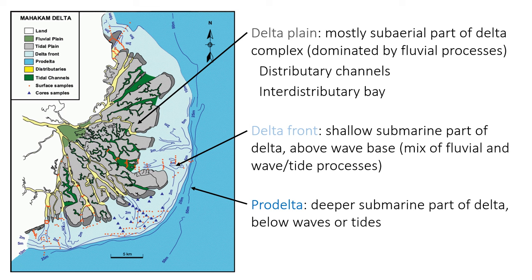The clues for a broader delta-type setting include unidirectional ripples in a marine environment, possibly including climbing ripples closer to the mouth bar, and the potential for soft sediment deformation. Let's now dig into more specific delta sub-environments: the deep submarine pro-delta, the shallower submarine delta front, and the largely above-water delta plain.